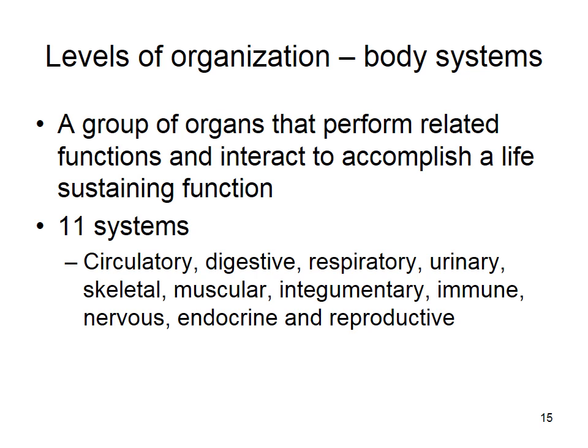Organ systems are groups of organs working together to do some sort of life-sustaining function. We're going to talk about 11 systems: circulatory, digestive, respiratory, urinary, skeletal, muscular, integumentary, immune, nervous, endocrine, and reproductive.